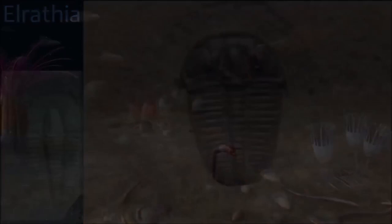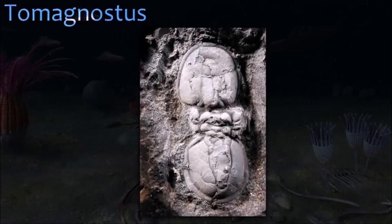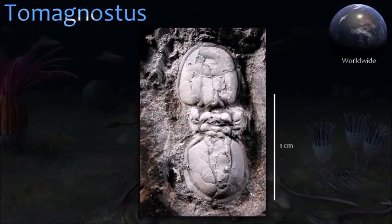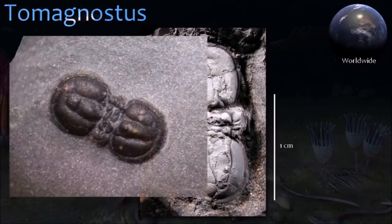Tomagnostus is one of many agnostoid trilobites with an almost global distribution, valuable in correlating Cambrian rocks across wide areas. It probably lived in the open ocean but occurs as a fossil in association with more local trilobites in different regions. Agnostoids were highly specialized and distinctive members of the trilobite group.